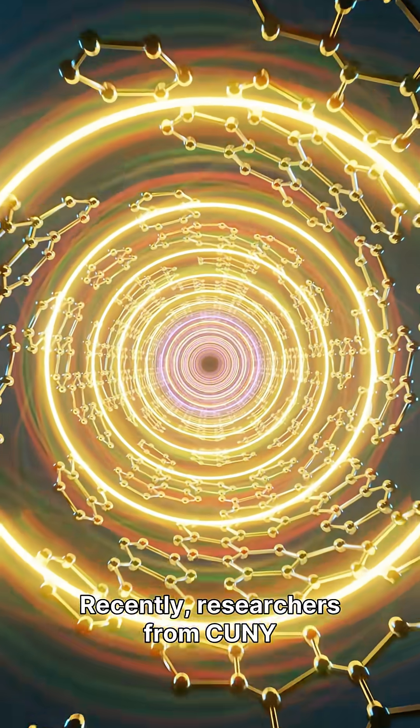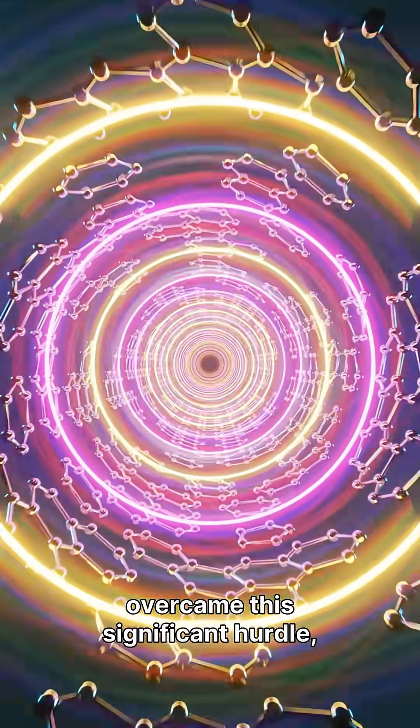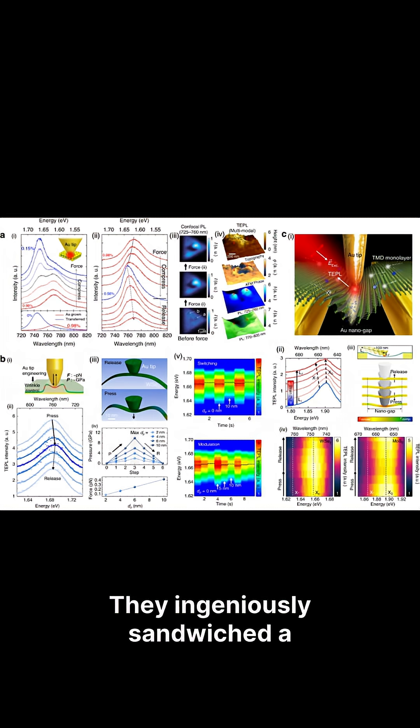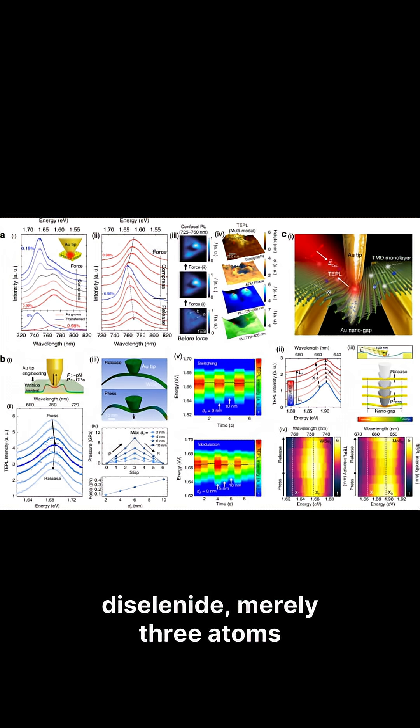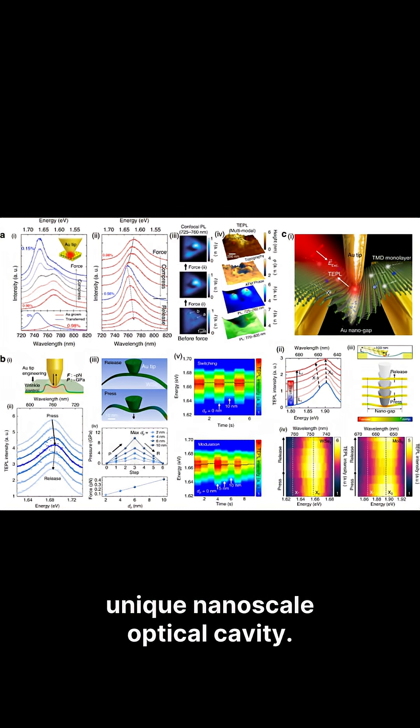Recently, researchers from CUNY and UT Austin successfully overcame this significant hurdle, achieving a groundbreaking scientific breakthrough. They ingeniously sandwiched a single layer of tungsten diselenide, merely three atoms thick, between precisely engineered gold nanotubes, forming a unique nanoscale optical cavity.